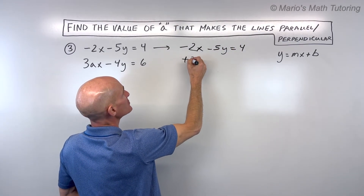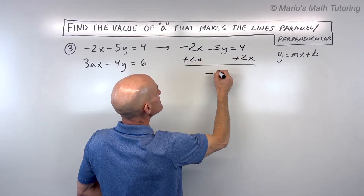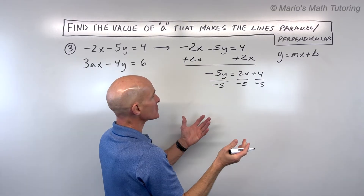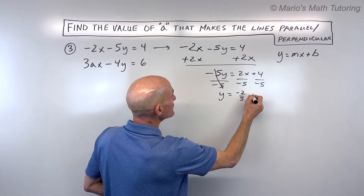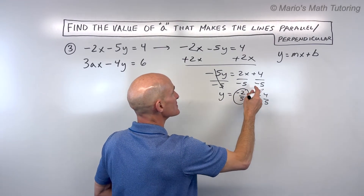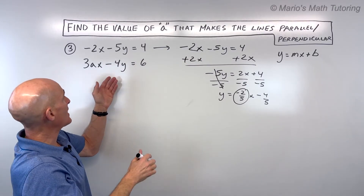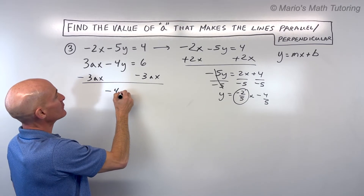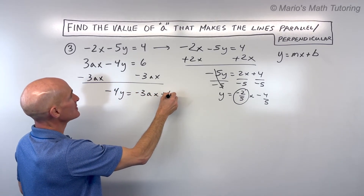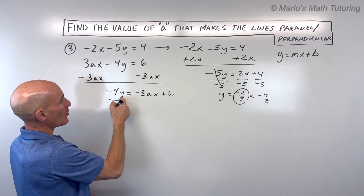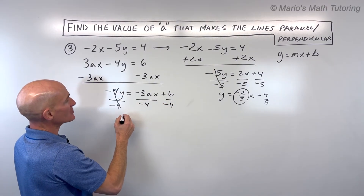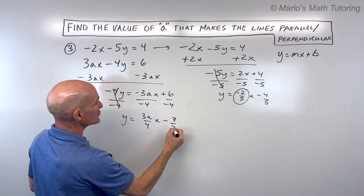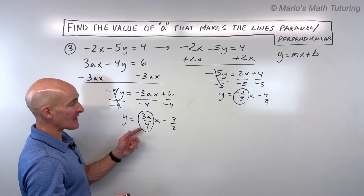For the first equation, we add 2x to both sides to get negative 5y = 2x + 4, then divide by −5 to get y = (−2/5)x − 4/5. So the slope is −2/5. For the second equation, we subtract 3ax from both sides to get negative 4y = negative 3ax + 6, then divide by −4 to get y = (3a/4)x − 3/2. The slope of this line is 3a/4.